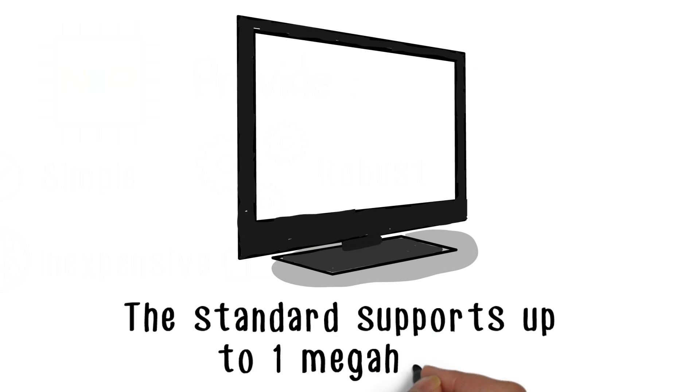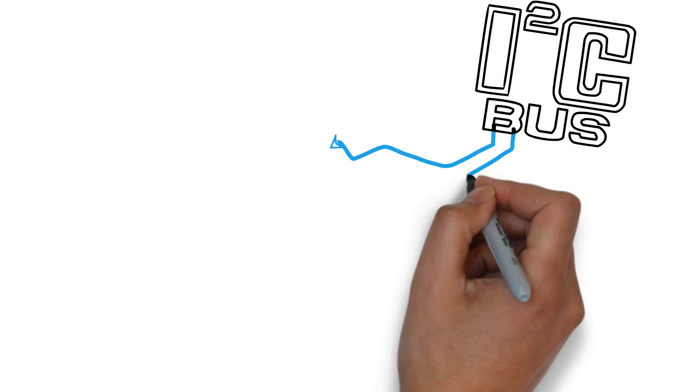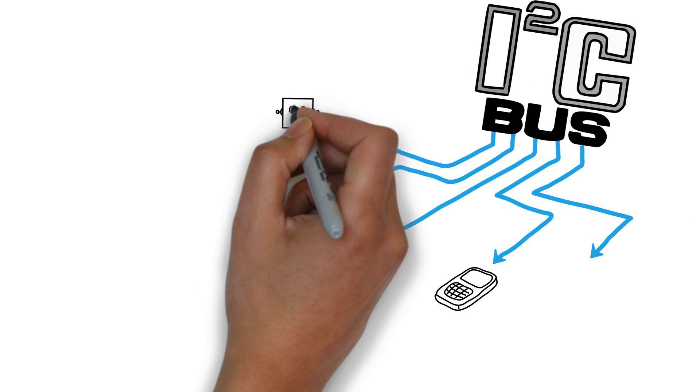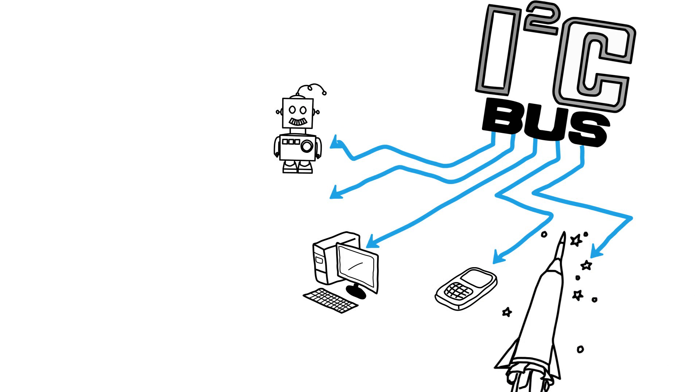Today, the standard supports up to 1 MHz. And I2C is the most widely used serial bus across every type of application. From smartphones to instruments to industrial equipment to aerospace to automotive, and so on.